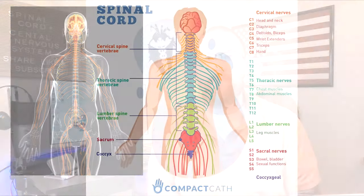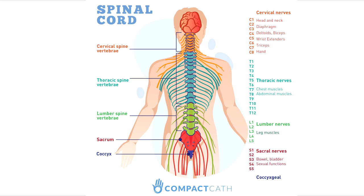Remember, the central nervous system consists of the brain and spinal cord. The brain receives, interprets, and sends electrically charged neural signals to control all the body's daily functions. The spinal cord is the carrier on which these messages travel to and from the rest of the body.